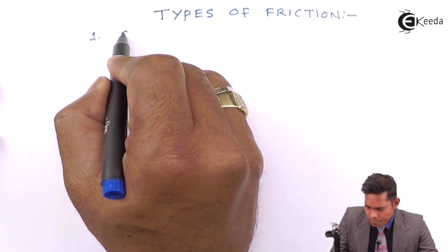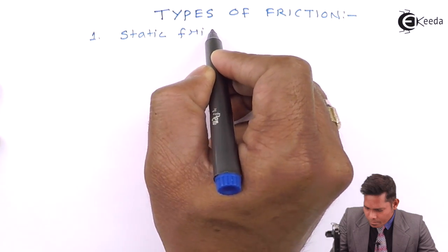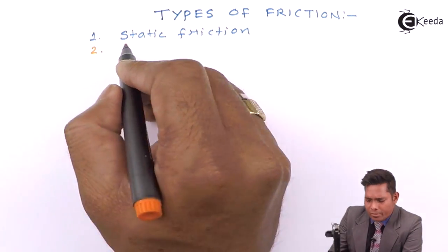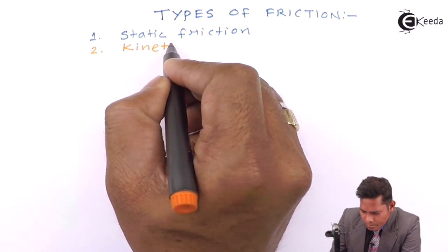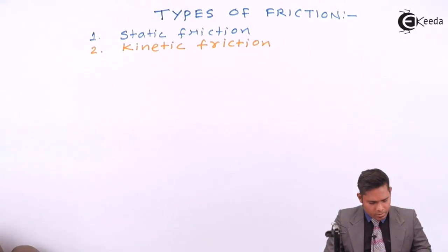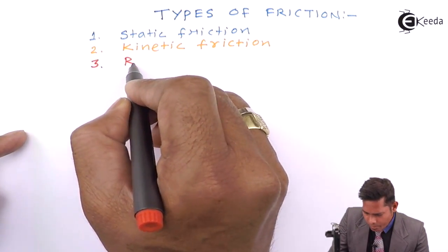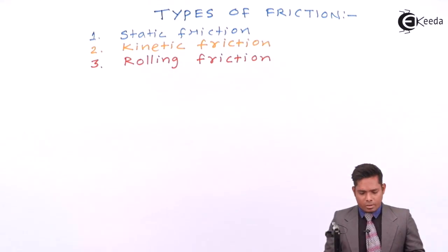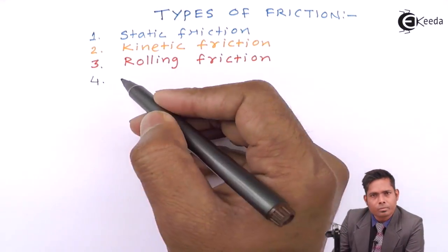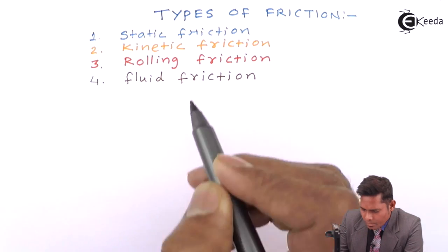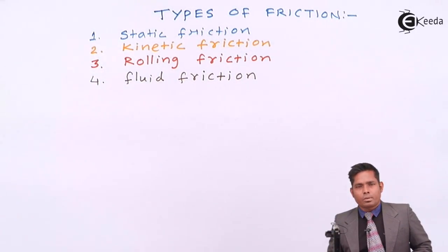The first one is static friction. The second one is kinetic friction. The third one is rolling friction, and the fourth one is fluid friction. So there are basically four types of friction and we will start one by one, beginning with static friction.